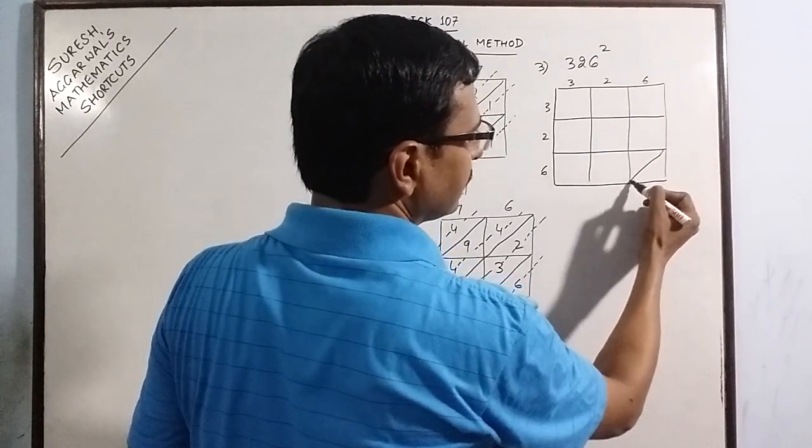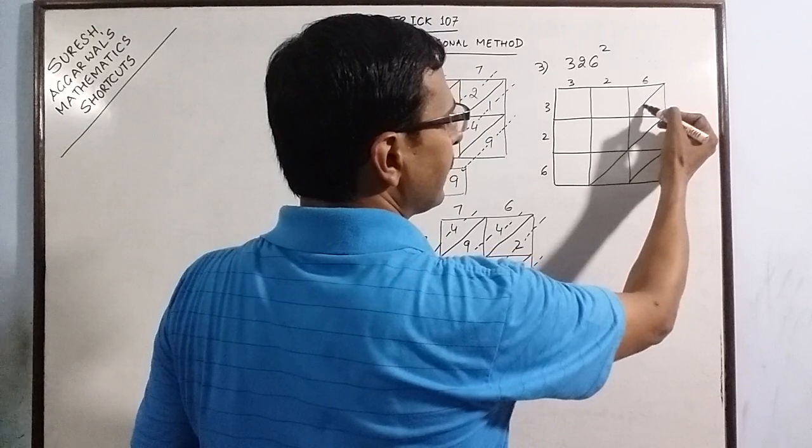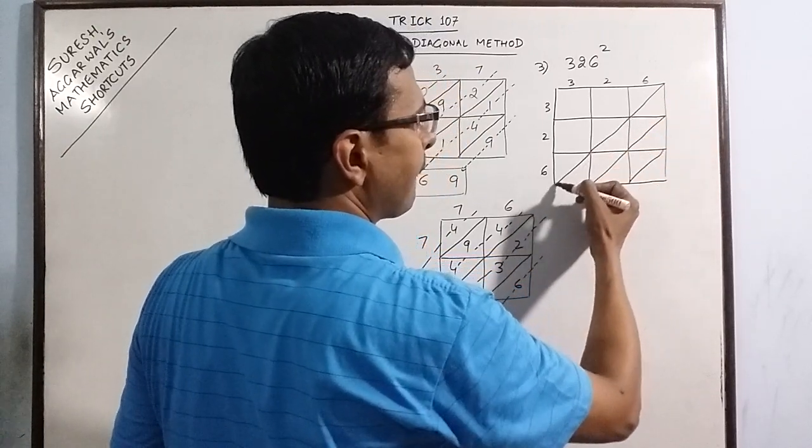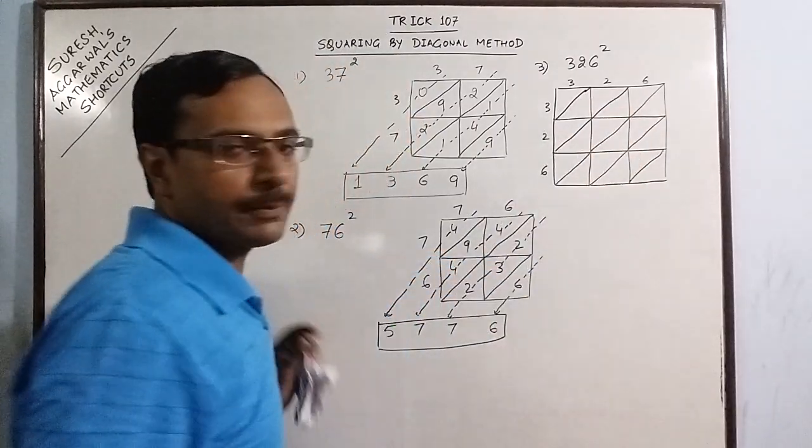The first diagonal. The second diagonal. The third diagonal. The fourth diagonal. And the fifth diagonal. Now we have 3 digit number. Now write the products.